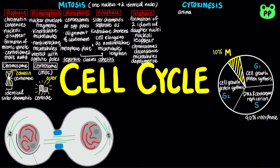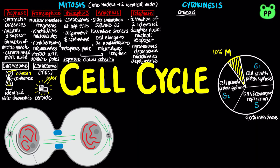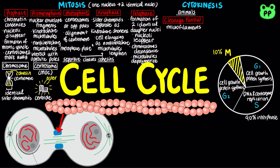In animal cells, cytokinesis occurs through the formation of a cleavage furrow, a shallow groove in the cell surface near the old metaphase plate. During cytokinesis, microfilaments form an actin ring around the cleavage furrow that tightens to contract. The cleavage furrow deepens until the parent cell is pinched into two completely separated cells.